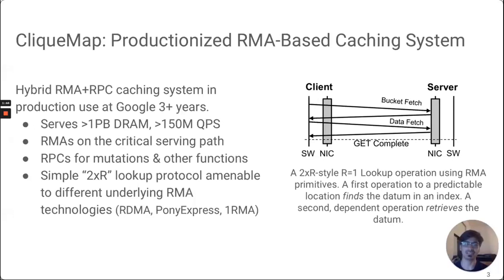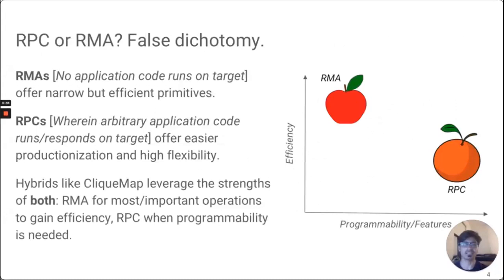In the three-plus years it's been in production, ClickMap has grown beyond a petabyte of DRAM capacity and more than 150 million global QPS. The critical feature is that it uses efficient RMAs for lookups and RPCs for all other operations including mutations and cache fills. While RPCs are the default choice for communication in distributed systems, RMAs have been gaining traction. The key difference is that RMAs are essentially fixed-function and don't invoke application code at the target, whereas RPCs are fully programmer-defined. At Google, feature-rich RPCs offer significant advantages but lag behind RMA operations for outright efficiency.